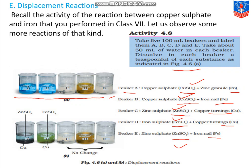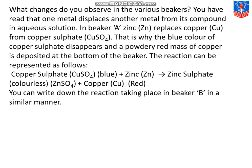Now let's see what will happen. In beaker A, zinc replaces copper from copper sulfate — zinc displaces copper and forms zinc sulfate. That is why the blue color of copper sulfate disappears; zinc has taken copper's place, so the blue color disappears. And the powdery red mass of copper is deposited at the bottom of the beaker. The reaction is: CuSO4 (blue) + Zn → ZnSO4 (colorless) + Cu (red powder settled at bottom).